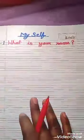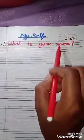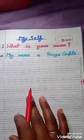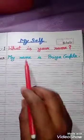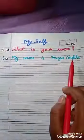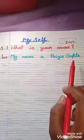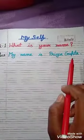Question number one: What is your name? (Tumhara naam kya hai?) Answer: If you are Priya Gupta, then you write — My name is Priya Gupta. (Mera naam Priya Gupta hai.)